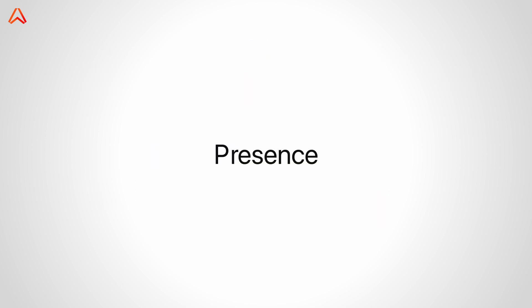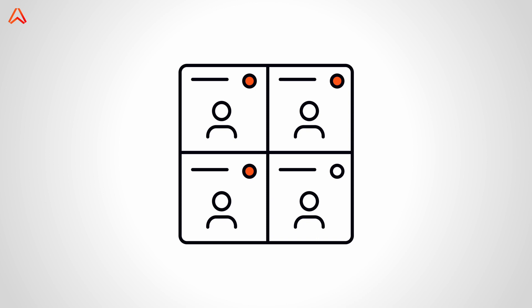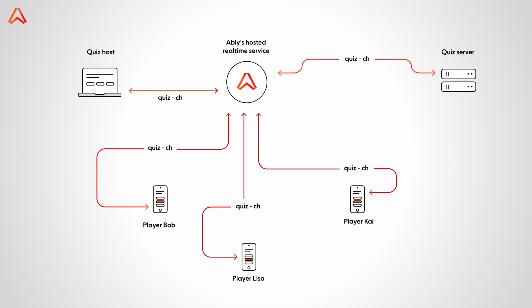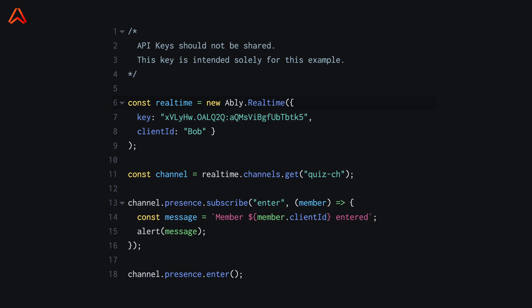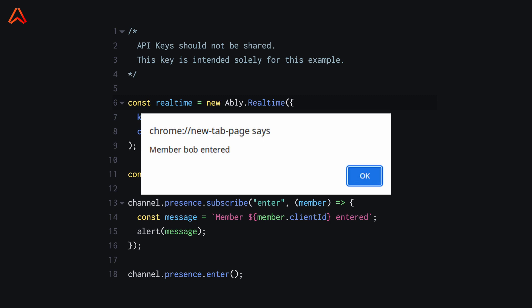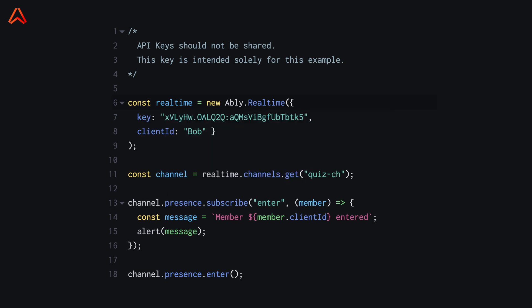Ably's presence feature allows us to know if participants are online or offline. We can use the quiz channel to manage the presence set and ensure our host and participants enter the presence set as soon as they connect. If they quit or disconnect, they will automatically disappear from the set. Unlike AWS, you don't need to handle this logic yourself. In the demo quiz app, you'll see only the quiz server has subscribed to presence events, so it can effectively manage participants, live stats, scores, and the leaderboard.